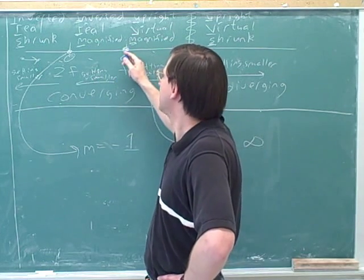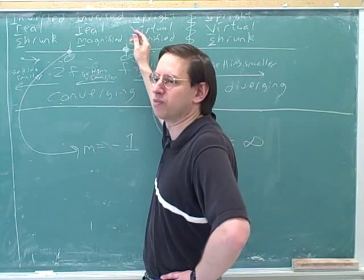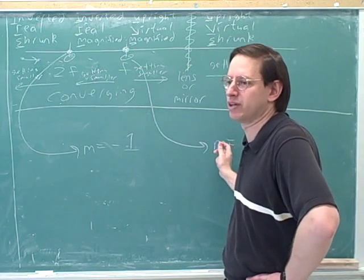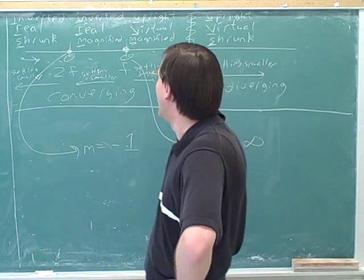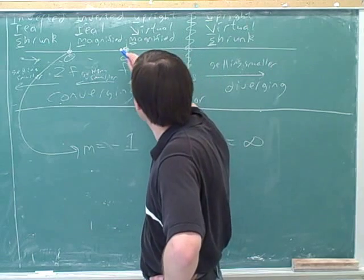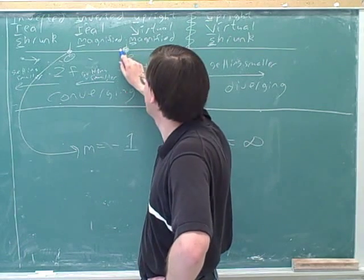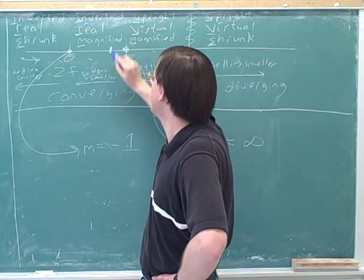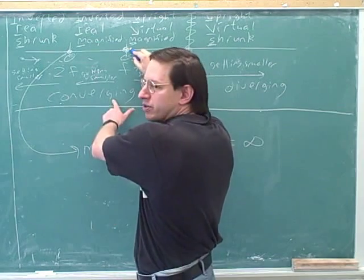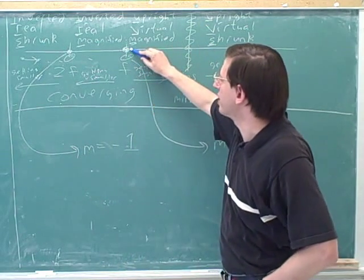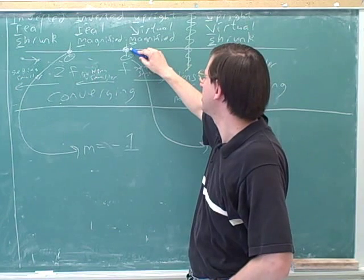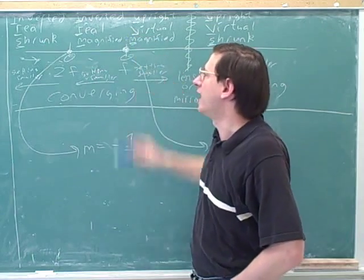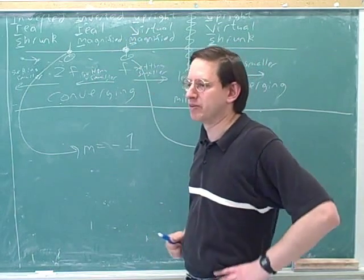Mathematically, if you could put a point object directly at the focal length, there would be no image at all. The chart tells us it can't be real or virtual — there is no alternative to that. The chart also tells us you'd have infinite magnification, which again means really no image. In the real world, if we're very close to the focal point but beyond it, we have a huge real image. And if we're a little bit closer to the device than the focal point, we have a huge virtual image.